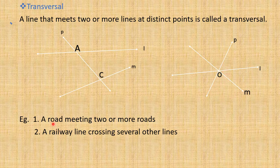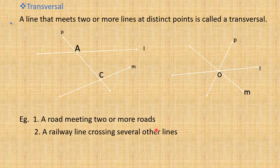Now, examples of transversals in our practical life: we can see examples like a road meeting two or more roads, or a railway line crossing several other lines.